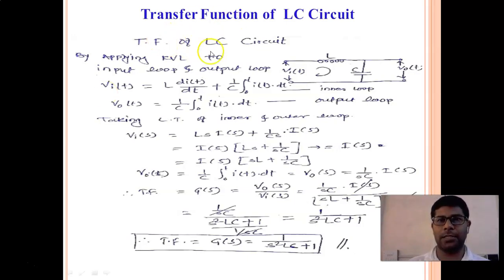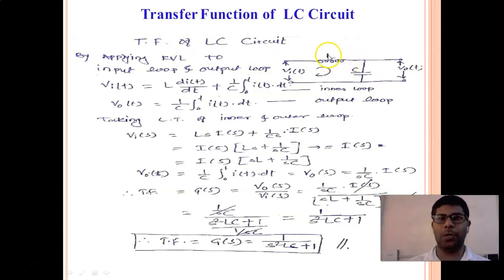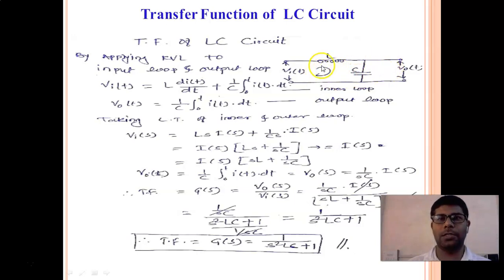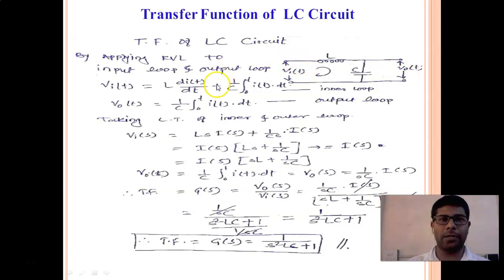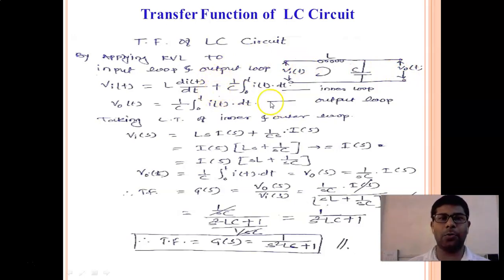Here is the circuit with L and C — two components: one inductor and one capacitor. We will apply KVL for the inner loop and outer loop. This is the input loop and this is the output loop. We will derive the transfer function by taking the Laplace transform of input and output.